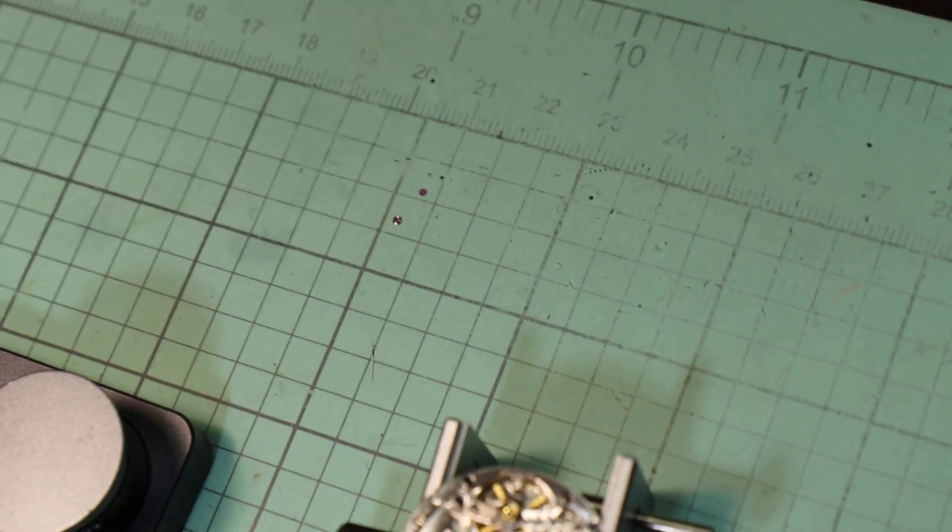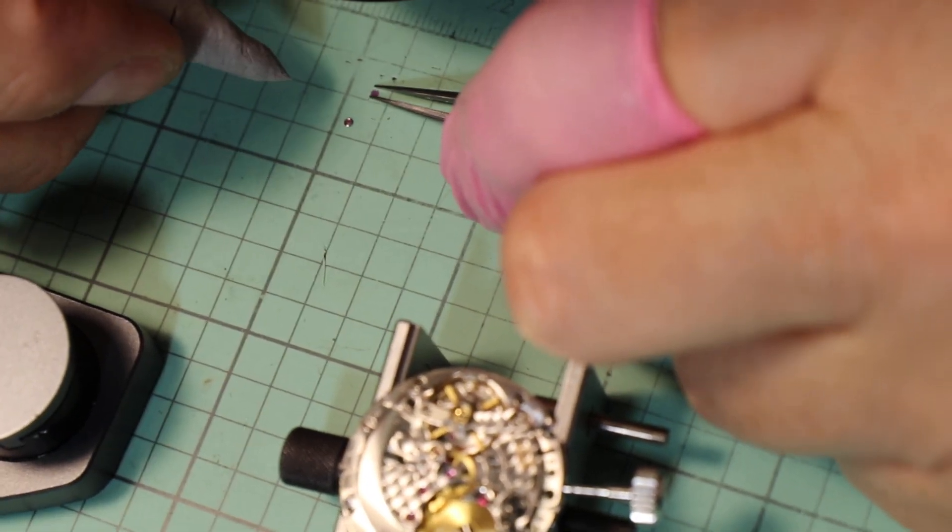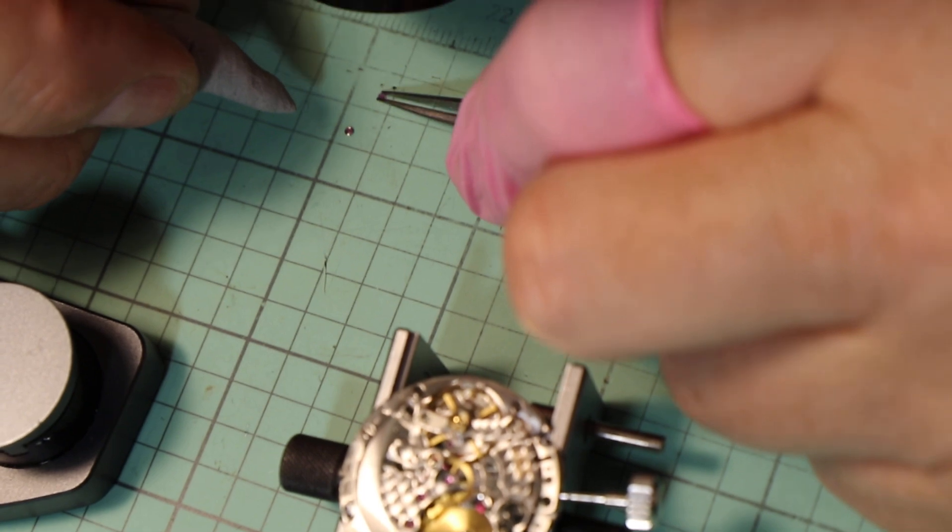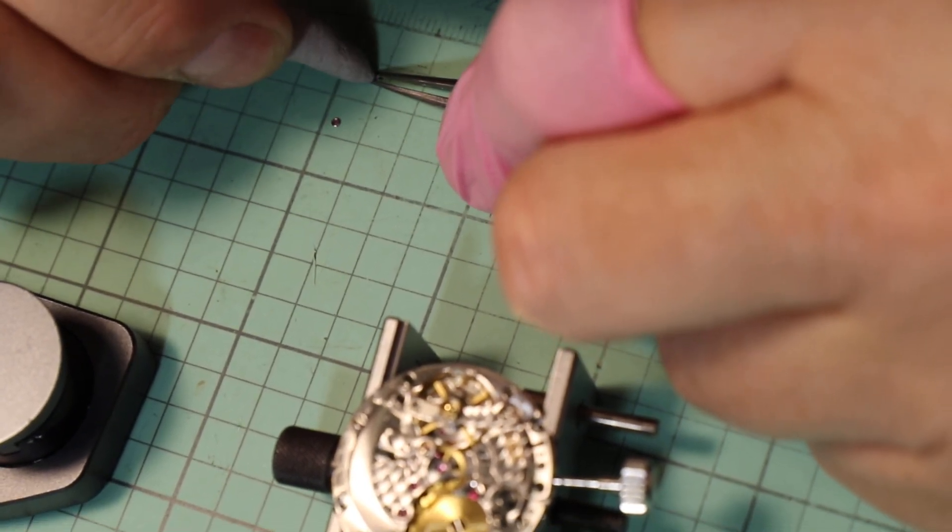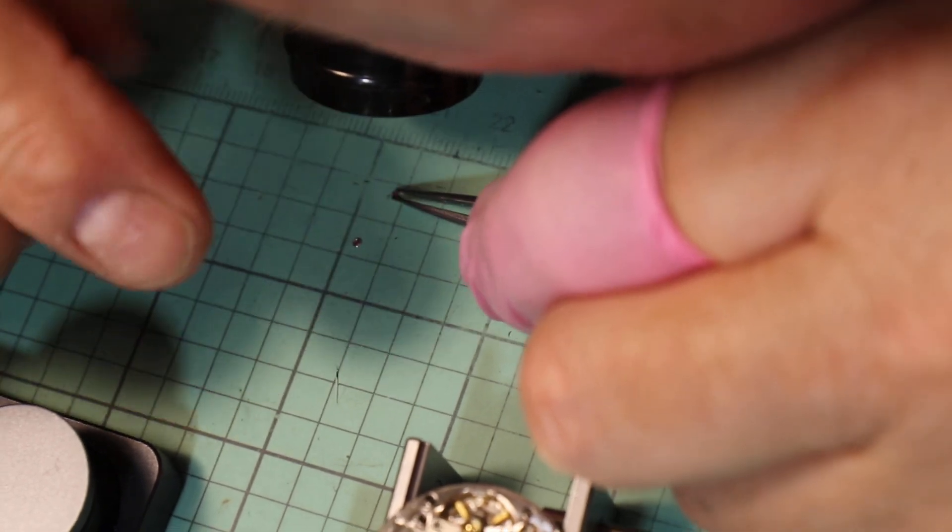When you have this 10 power loupe on, you can see everything. If you can't see the smudges, then you really need to practice seeing. If you can't see it, you can't do it. That's the bottom line.